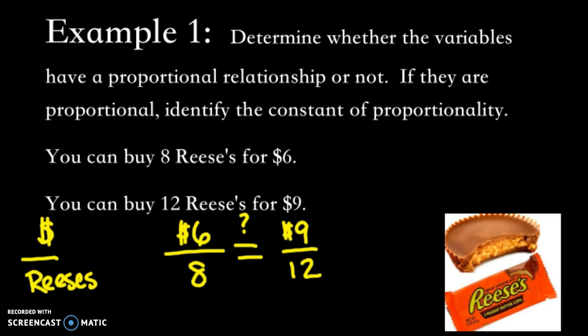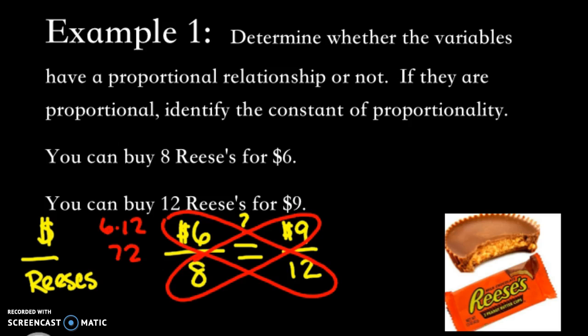Maybe one of the simplest would be to use our cross-multiplying techniques. And if you check this here, 6 times 12, you get 72. And then the other cross-product, 8 times 9 equals 72. So in both of these situations, we get 72. That means that these are equivalent ratios, which means they form a proportion.